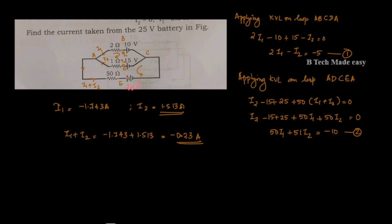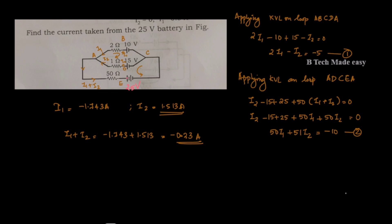This is the first module on electrical circuits. To study these problems, you apply KVL on each loop and write the equations. This is an important method. We discussed how to organize circuit problems using equations, and for solving we can use determinants. We will discuss more of these types of problems next time.